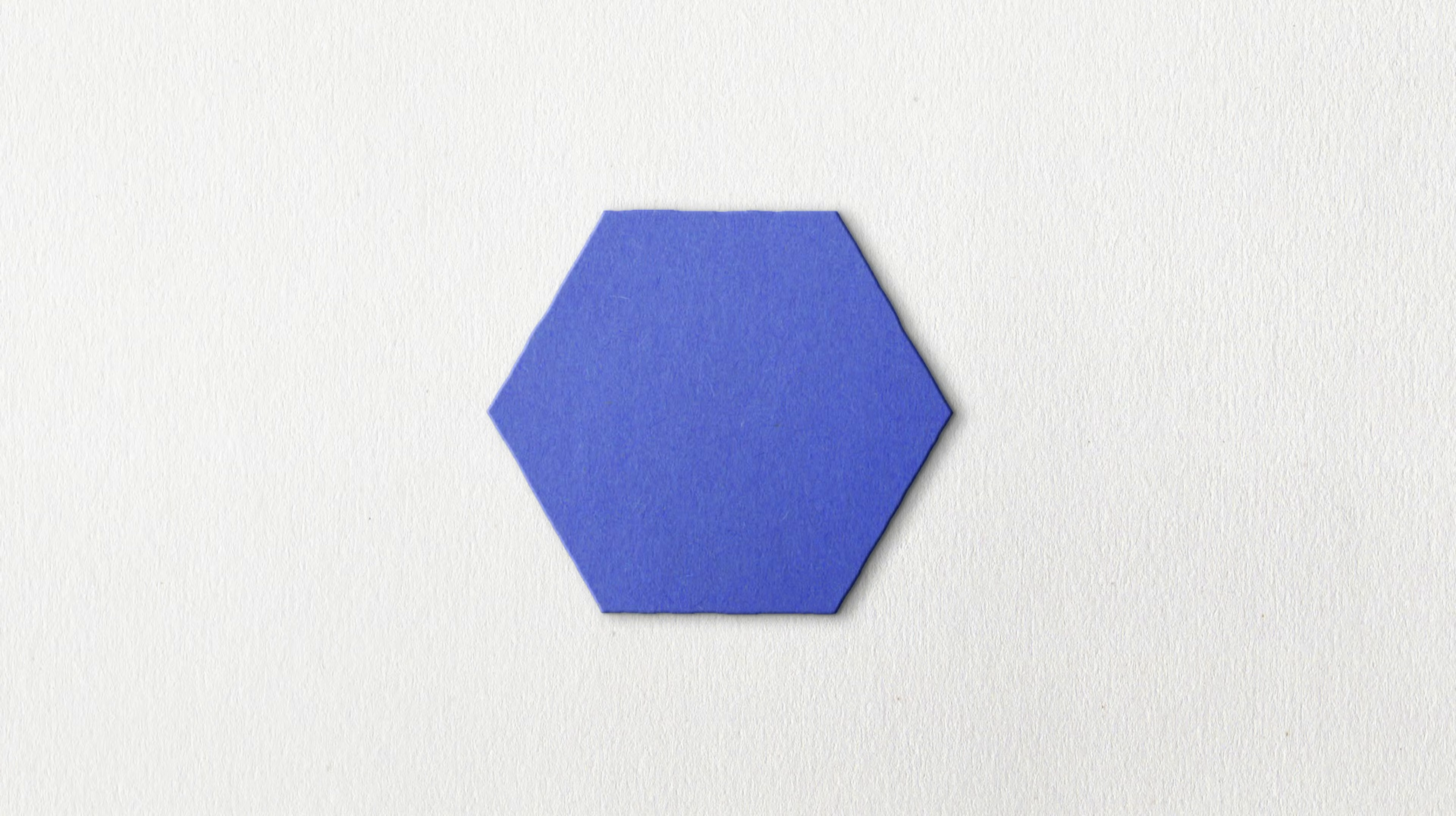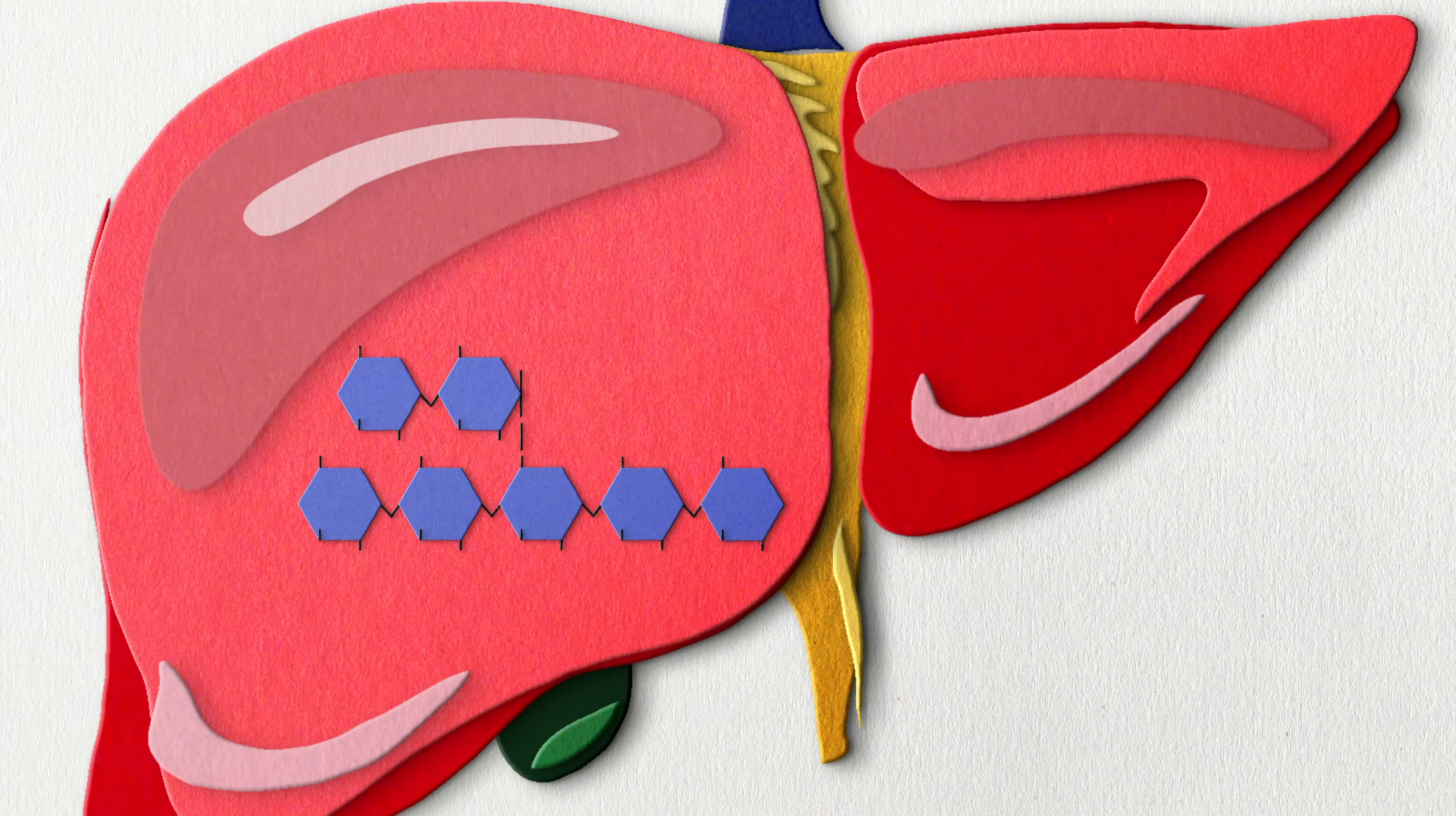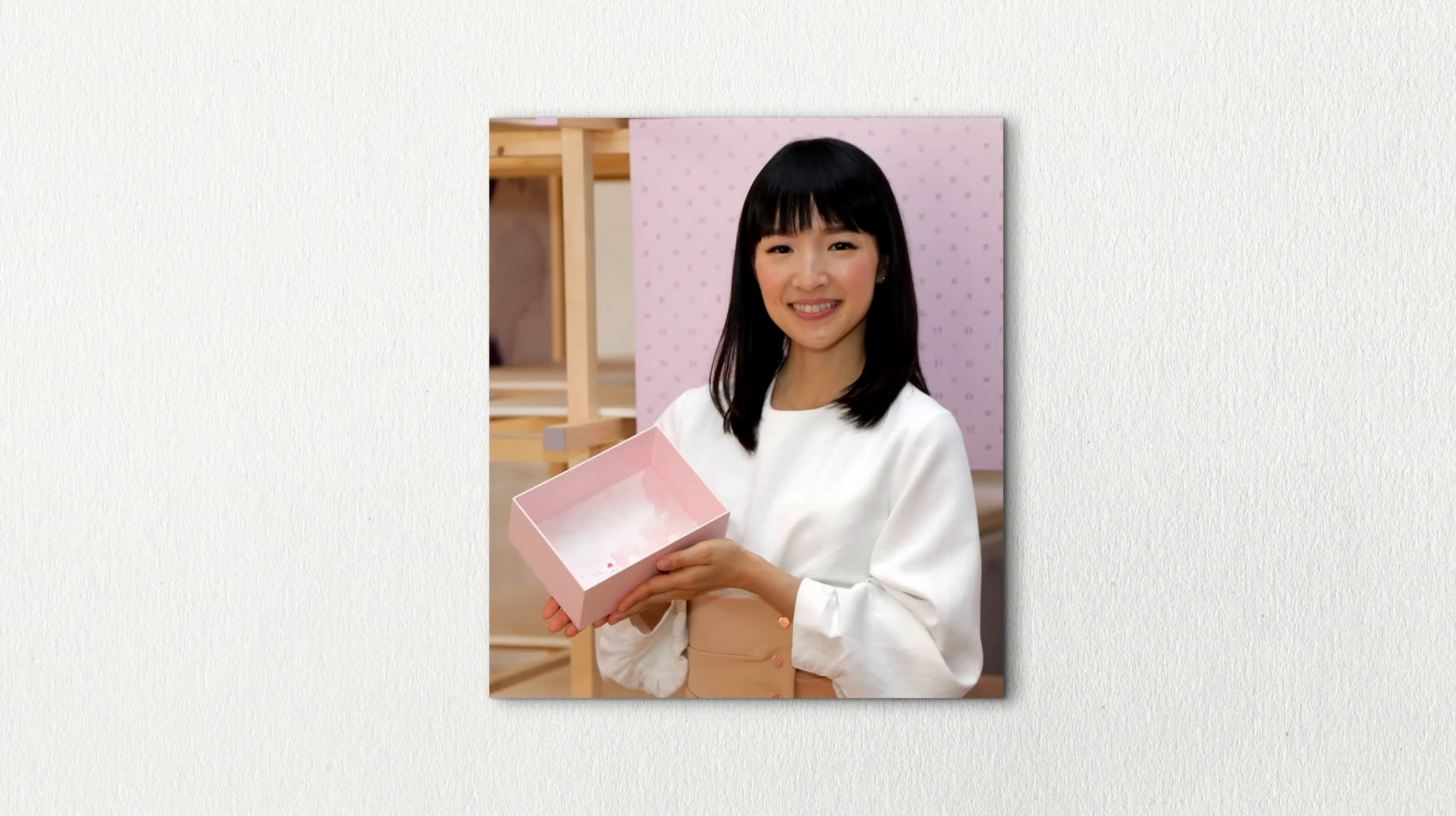For example, glucose as a single unit or a monomer can be used by our bodies to produce energy. Glucose can then be stored by the liver as glycogen, which is basically a bunch of glucose molecules neatly packed together. Let's say this is nature's response to Marie Kondo.